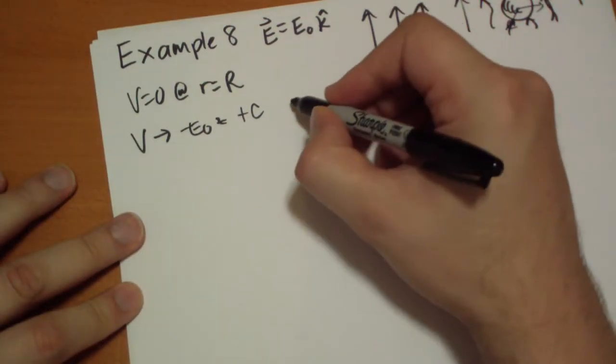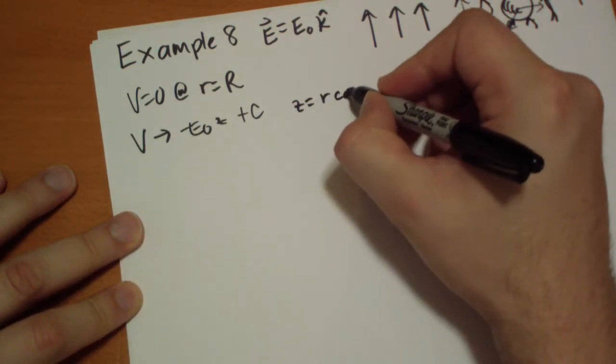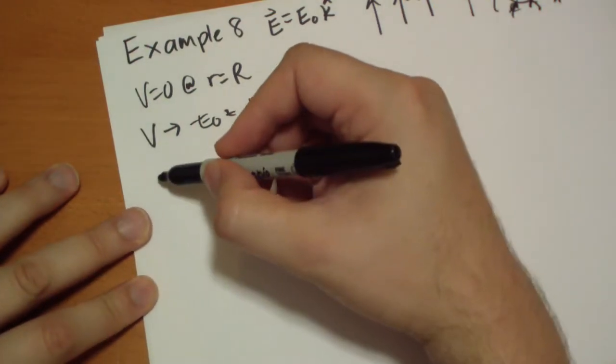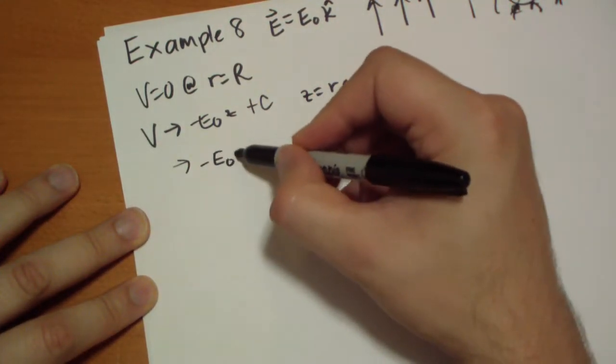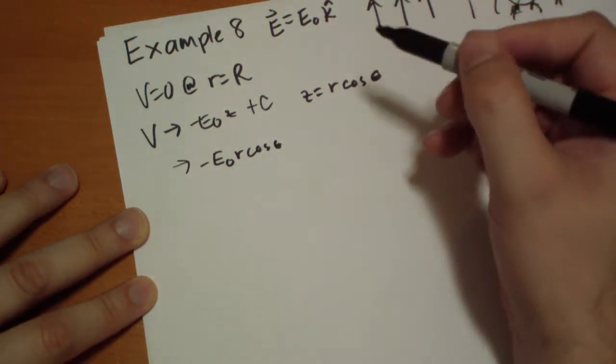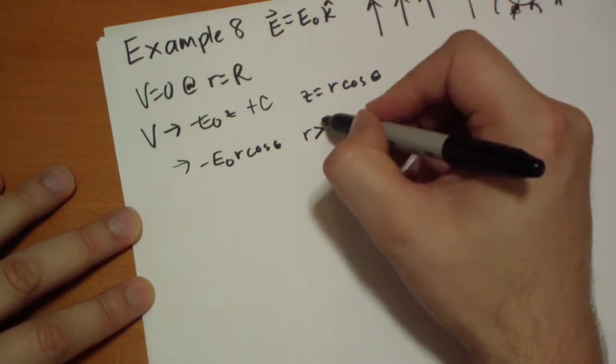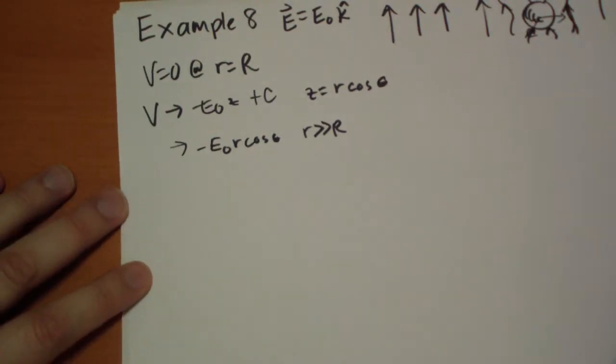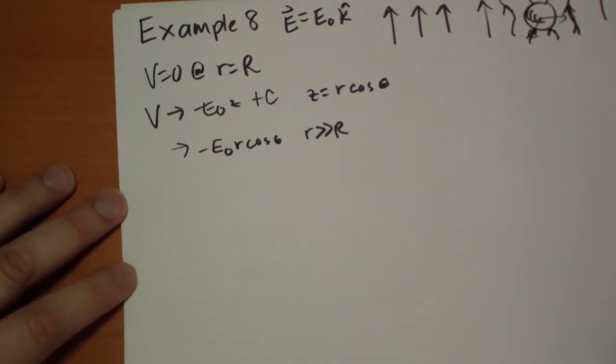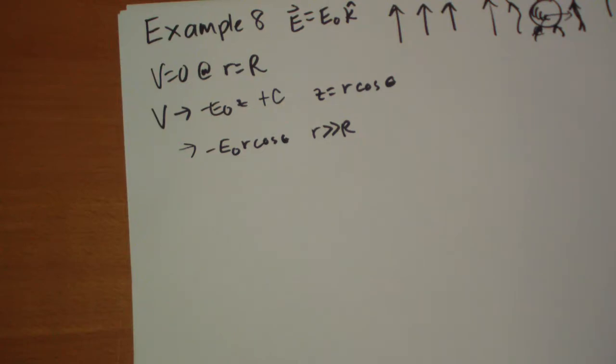Z is R cos theta. So that means V goes to negative E-naught R cos theta, and that's only for very large R, above or below, it doesn't matter. So those are our two conditions.